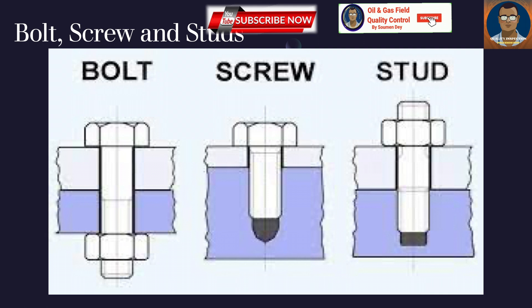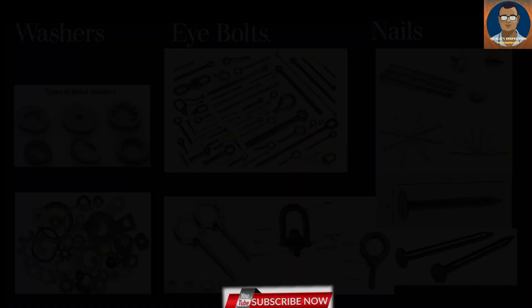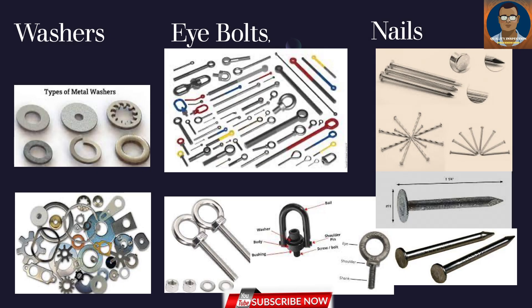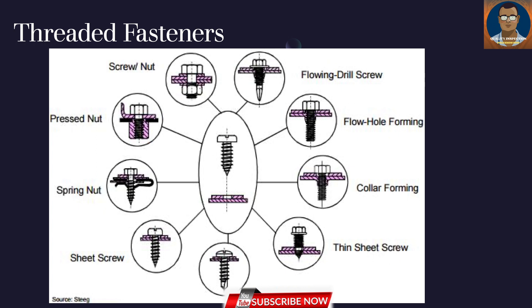You can see the comparable photo between bolt, screw, and stud. There are also different types of washers — metal washers, plastic or non-metallic washers, in different shapes and sizes. Eye bolts also come in different types. Nails are another type of temporary fastener used day to day — there are concrete nails and nails used for wood. You can also see sheet screws based on their application: spring nut, pressed nut, screw nut, flow drill screw, flow hole forming, collar forming, and thin sheet screw.